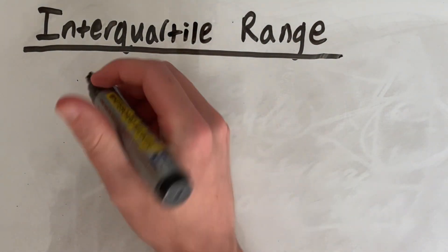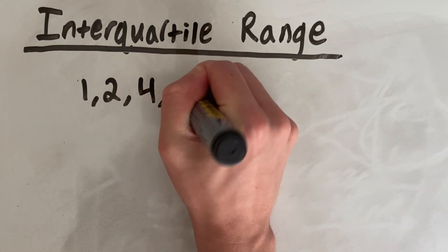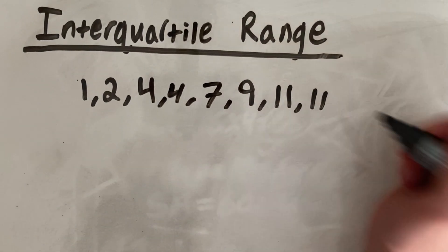So let's say that we have a dataset of 1, 2, 4, 4, 7, 9, 11, and 11.